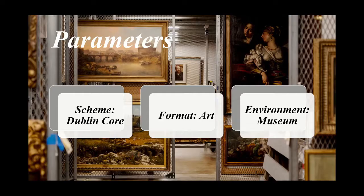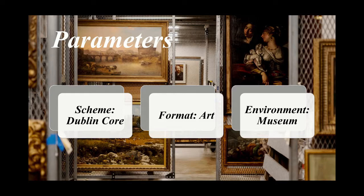After looking more into eHive and its origins and standards, I found that Vernon Systems, the company that makes eHive, is partnered with Spectrum. According to the eHive website, they follow the standards of Dublin Core. So for my scheme in this project, I have chosen Dublin Core. The website is used to catalog art and cultural heritage objects. In my last project I focused on photographs; for this project, however, my focus will be art. And finally, the environment for this project is a museum.